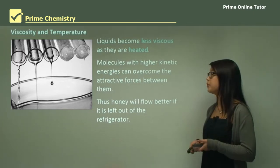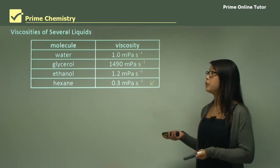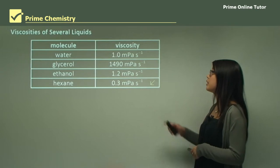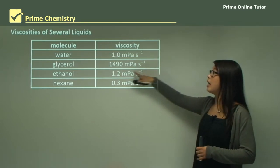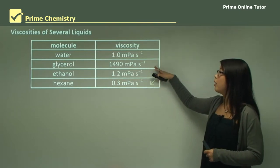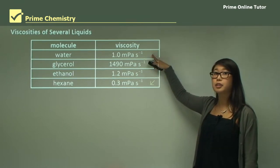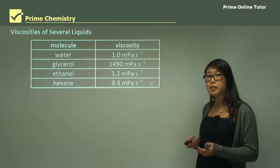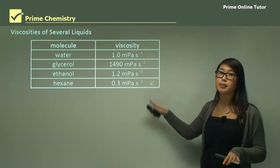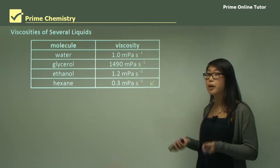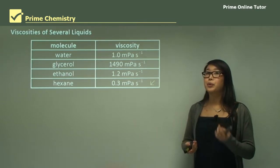Honey flows better out of the fridge because at higher temperature viscosity decreases. Looking at the viscosities of water, hexane, glycerol, and ethanol: glycerol has the highest viscosity because of its strong intermolecular bonds; ethanol is next as it's a bit longer; water is quite small but has hydrogen bonding so it attracts more than hexane; and hexane is the least viscous because it only has dispersion forces and is quite short.